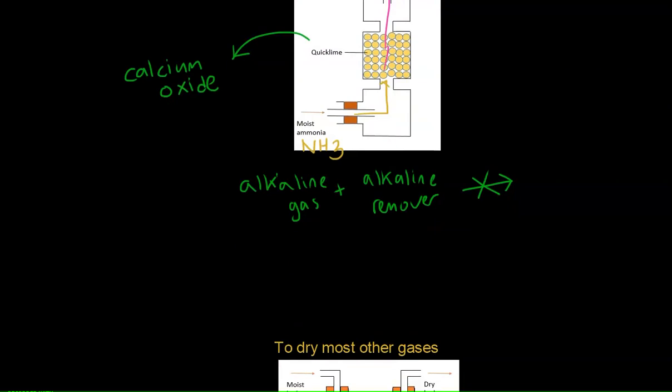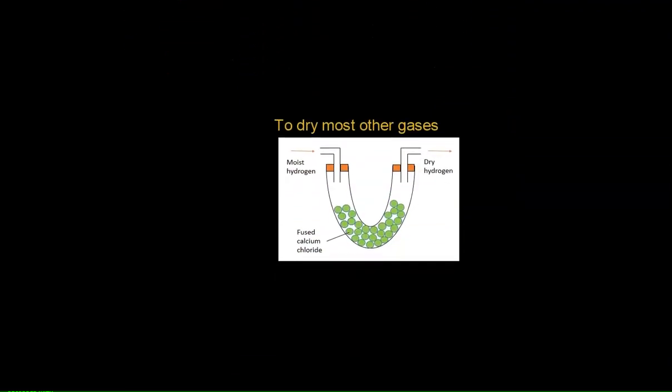Finally, to dry most other gases, this is the third method. We actually use a U-tube. This is called a U-tube because it's shaped in a U-shape. So what do we mean by most other gases?